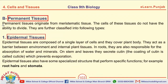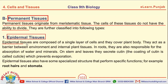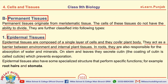The next kind is permanent tissue. What are permanent tissues? Permanent tissues originate from meristematic tissue. Epidermal tissues are composed of a single layer of cells and they form the covering of the plant body. The function of epidermal tissue is to act as a barrier between the environment and internal plant tissues. In roots, they are responsible for the absorption of water and minerals, and on stems and leaves, they secrete cutin.